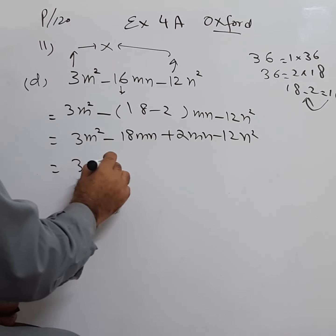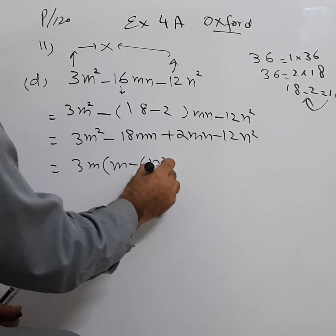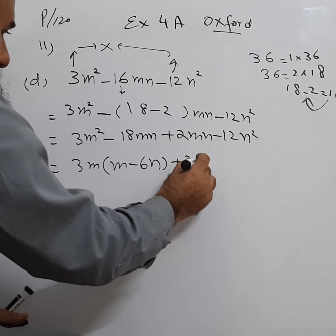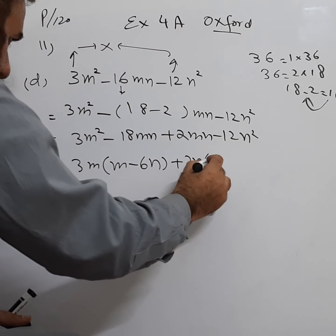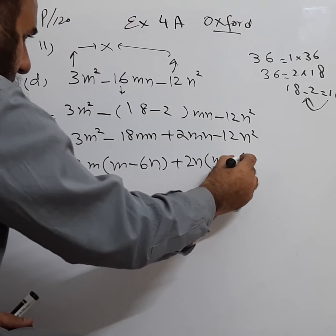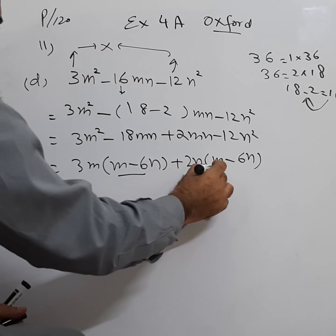Here we have common 3m. It becomes m minus 6n. Here we have 2n common, we have m minus 6n.